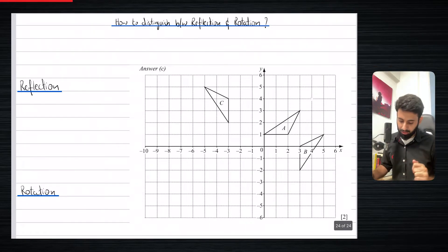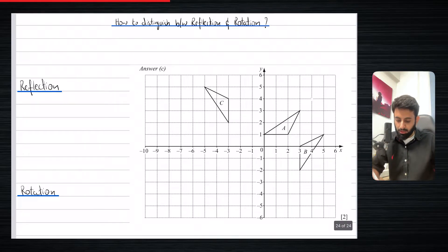So let me tell you, A is the object over here, and one of the two remaining triangles is the reflection of A, and the other is a rotation. So what we want to do is distinguish between which one's reflection and which one is rotation.